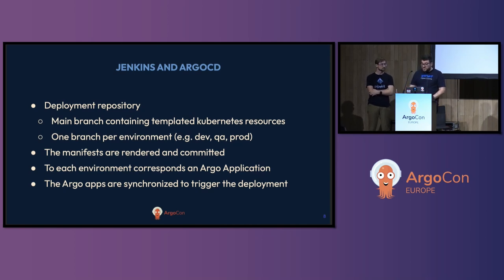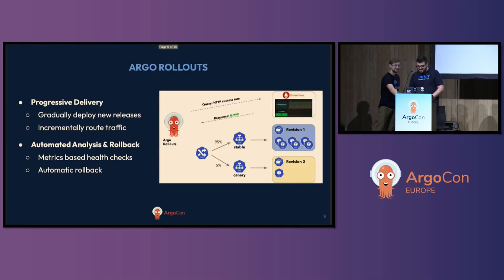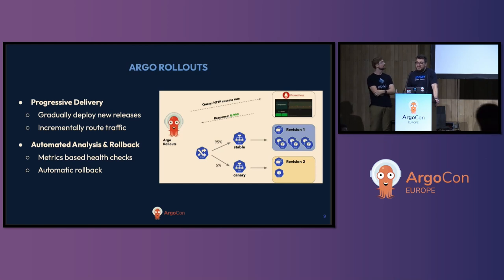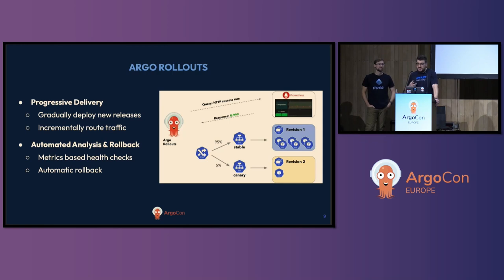For the actual deployment of the application, we're using Argo Rollouts. This has been a key game changer for our deployment strategy. I wanted to highlight two key aspects of Argo Rollouts: progressive delivery, and automated analysis and rollback.